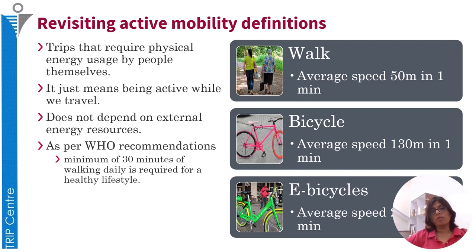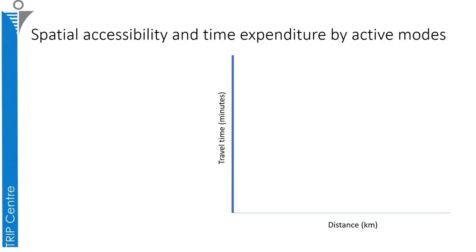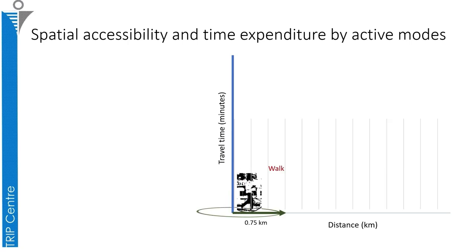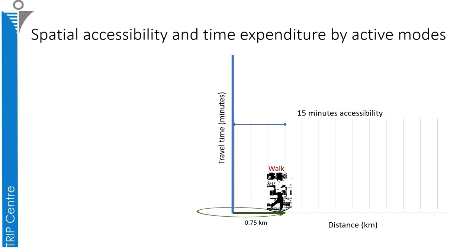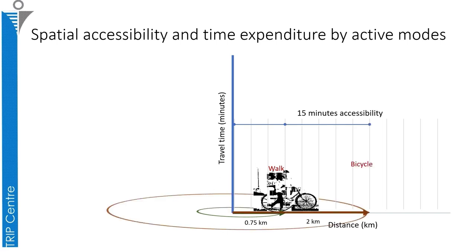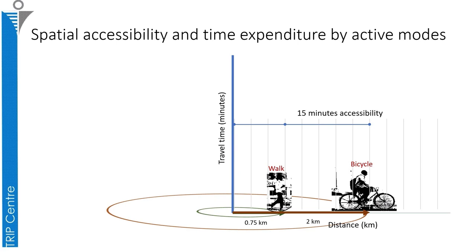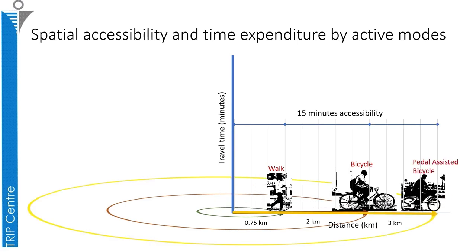For all three different modes, the average speeds vary and therefore the spatial reach varies. If a person is walking, they can reach up to 750 meters or 0.75 kilometers in 5 minutes. But if a person uses a bicycle, within the same given time they can reach up to 2 kilometers. And with the pedal-assisted bicycle, within the same time frame, they can reach up to 3 to 4 kilometers. So the three active modes offer different spatial reach within the same given time frame.